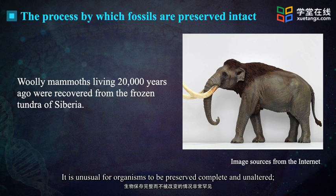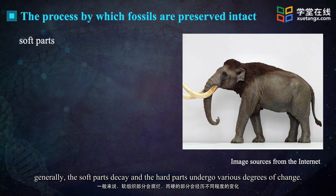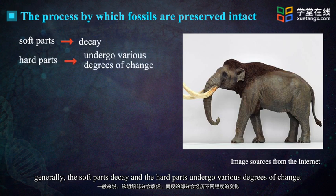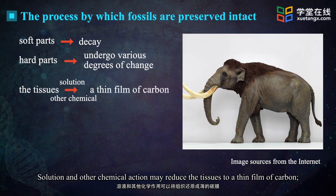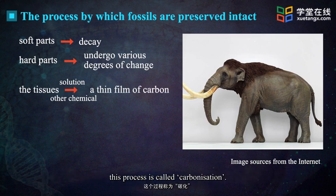It is unusual for organisms to be preserved complete and unaltered. Generally, the soft parts decay and the hard parts undergo various degrees of change. Solution and other chemical actions may reduce the tissues to a very thin film of carbon — this process is called carbonization.